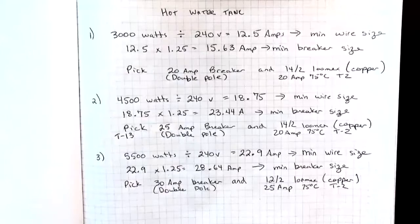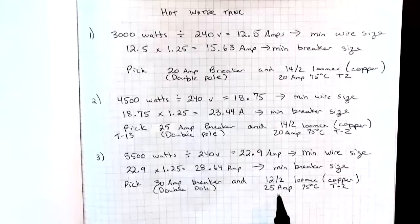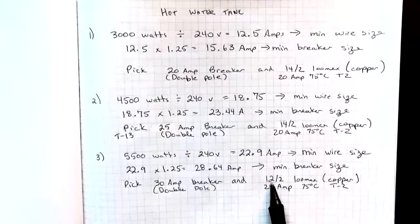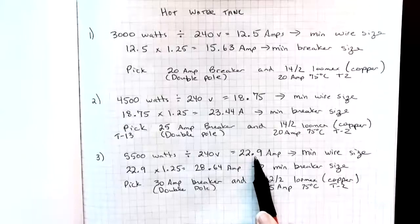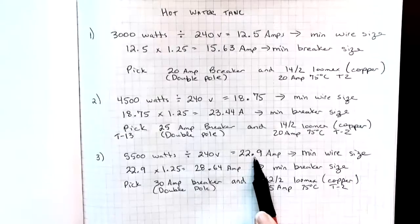Our third example is a 5500 watt hot water tank divided by 240 again gives me 22.9 amps. That's going to be the minimum wire ampacity. And if I go to table two, I choose a 12.2. It's good for 25 amps, which is at least as big and it's bigger than what I need to cover my load.